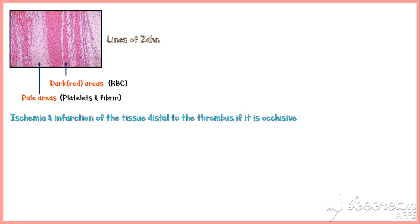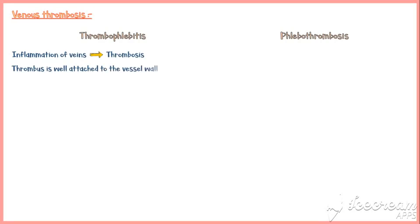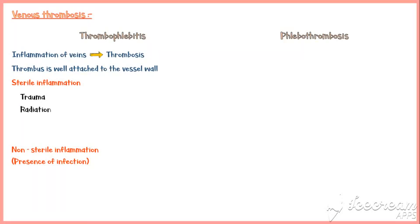Arterial thrombi can also embolize due to the rapid flow. Venous thrombosis can be broadly categorized into thrombophlebitis and phlebothrombosis. In thrombophlebitis, inflammation of the veins leads to thrombosis and the thrombus is well attached to the vessel wall. Inflammation could be sterile (from trauma, radiation, intravenous solutions, or certain chemicals) or non-sterile, where infection causes formation of septic thrombi that may give rise to septic emboli.